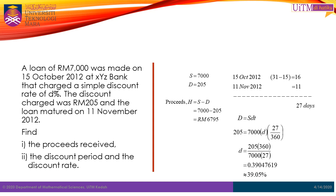Substituting these values in the formula and solving, we get the discount rate small letter d is equal to 39.05%.